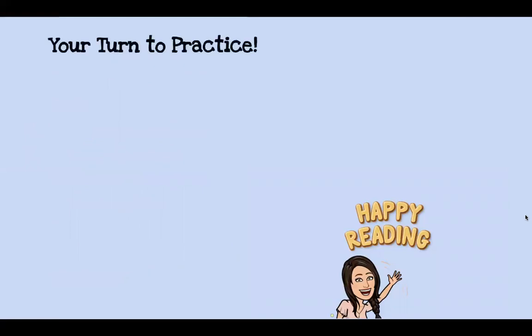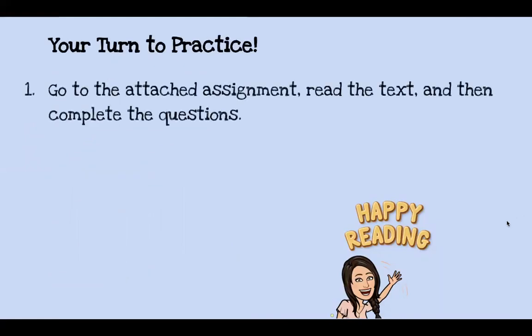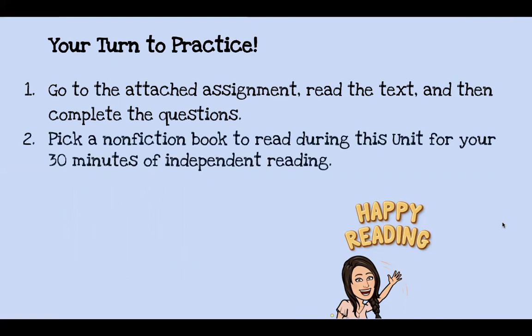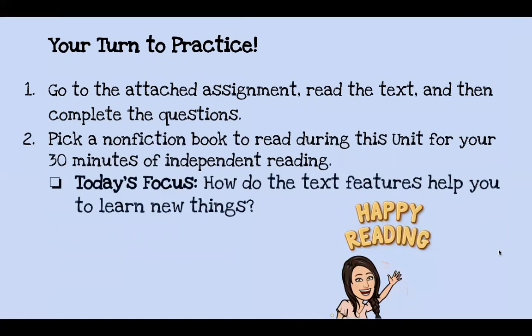When you go off to do your reading today to practice, you're going to first do the attached assignment — read the text called Wild Wild Weather and then complete the questions. Pick a nonfiction book to read during this unit for your 30 minutes of independent reading. The focus today for your 30 minutes of reading is thinking about how do the text features help you to learn new things. Do your assignment first that's attached to this lesson in your Google Classroom, read the text and answer the questions, and then jump into your 30 minutes of independent reading. Happy reading!